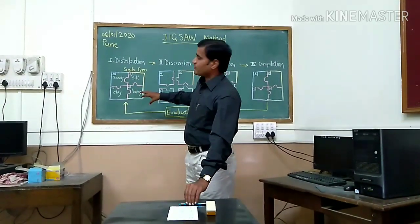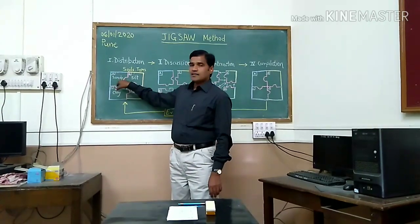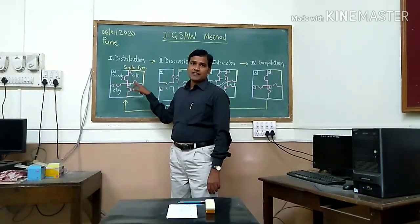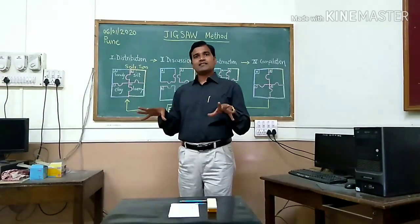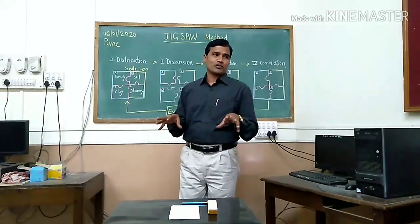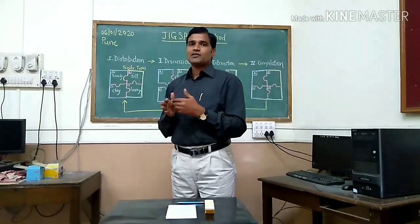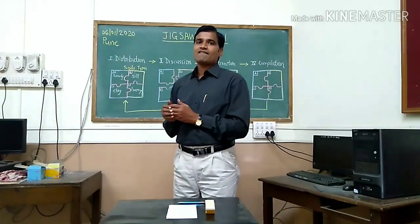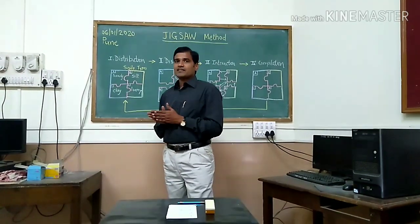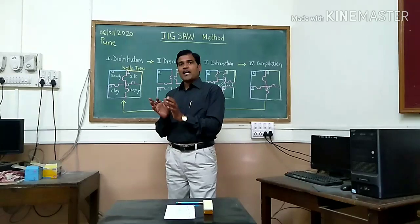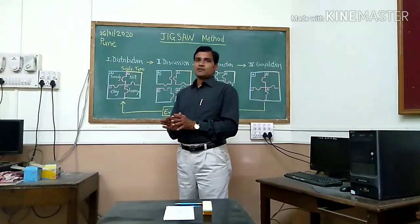So first, for example, I will give first type to one group, second type to other group. In that way, I will make the classroom into four groups. So I will make their sitting arrangements separately and I will give the material related to that particular unit to that group. So after distribution of group and distribution of the unit, subunit, then next phase is discussion.